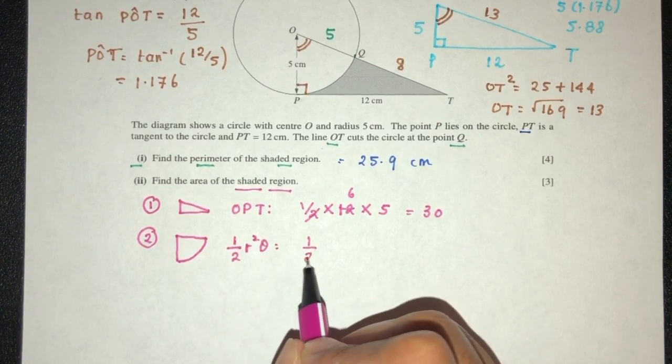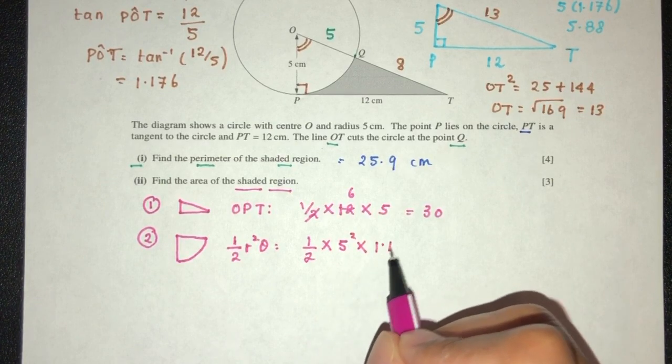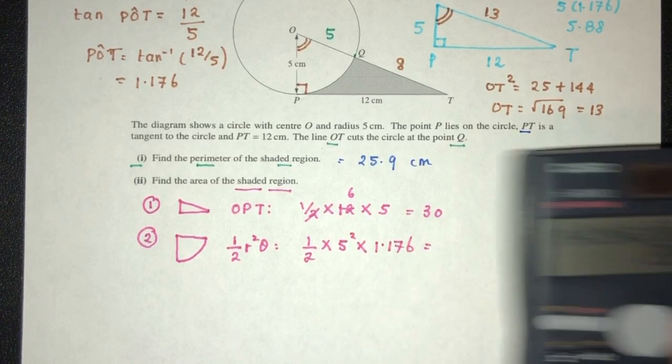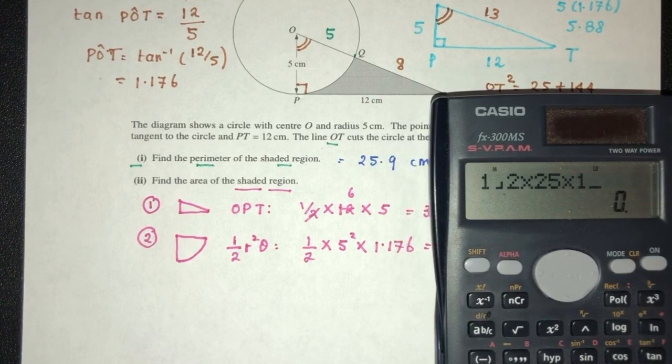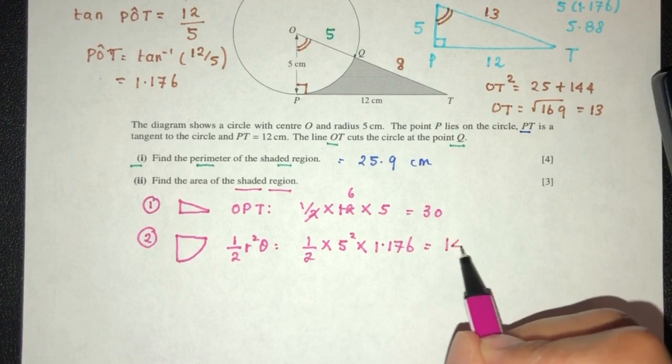Half is half. R squared is 5 squared. Theta is the angle in between that is 1.176. So half times 25 times 1.176. That will be 14.7.